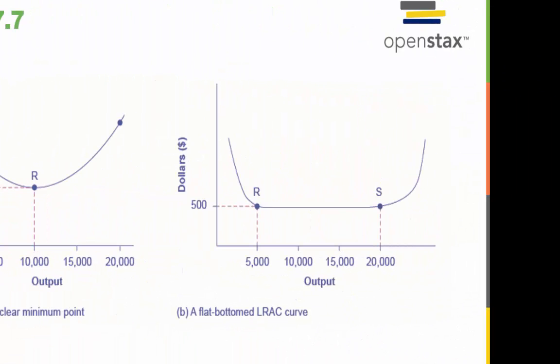Low cost firms will produce between output levels R and S when the LRAC curve has a flat bottom, like on the graph on the right. Then firms producing at any quantity along this flat bottom can compete. In this case, any firm producing a quantity between 5,000 and 20,000 can compete effectively. Although firms producing less than 5,000 or more than 20,000 would face higher average costs and be unable to compete.